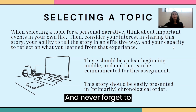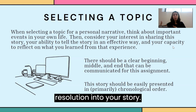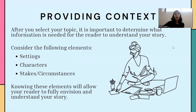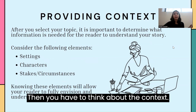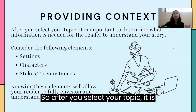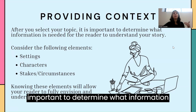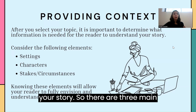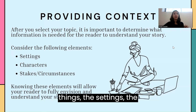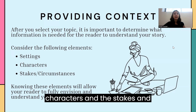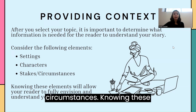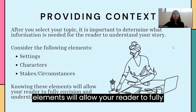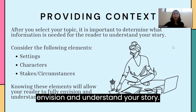Never forget to put a conflict and a resolution into your story. Then think about the context. After you select your topic, it is important to determine what information is needed for the reader to understand your story. There are three main things: the settings, the characters, and the stakes and circumstances. Knowing these elements will allow your reader to fully envision and understand your story.